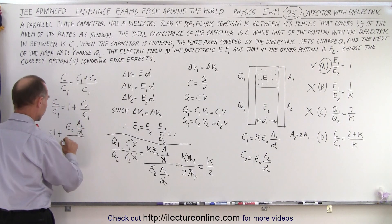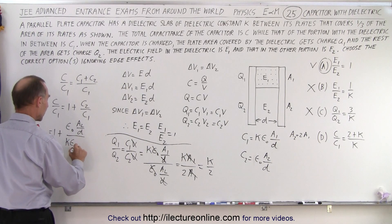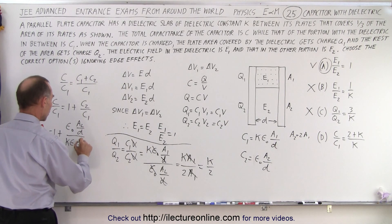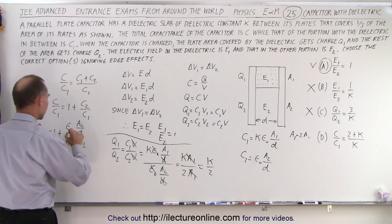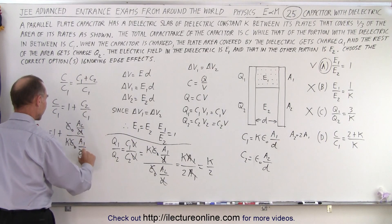and C1 is equal to K times epsilon naught times A1 over D, and the epsilon naughts cancel and the Ds cancel.